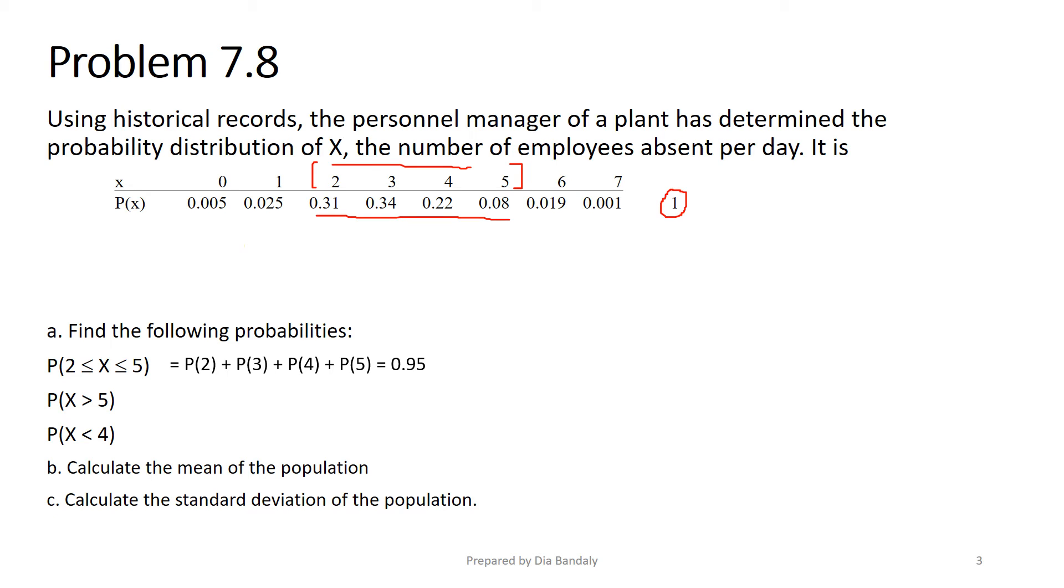Probability that X is greater than 5. Pay attention: it's greater, not greater than or equal. Greater than 5 means we are in the case where we have 6 or 7. So it's P(6) plus P(7), and we get 0.02 - very small probability. Then probability that X is less than 4. Again, 4 is not inclusive. These are less than 4: X equals 3, 2, 1, and 0. We get 0.68. That was very straightforward.